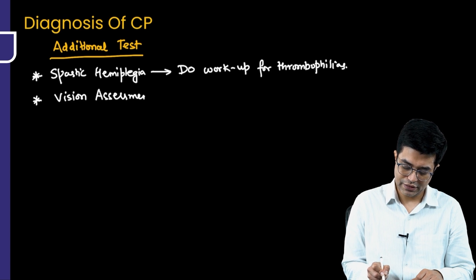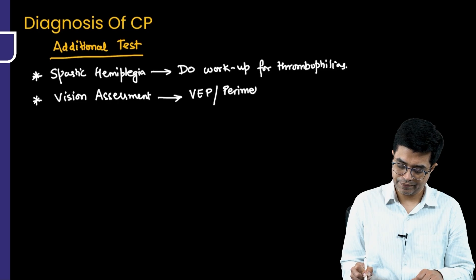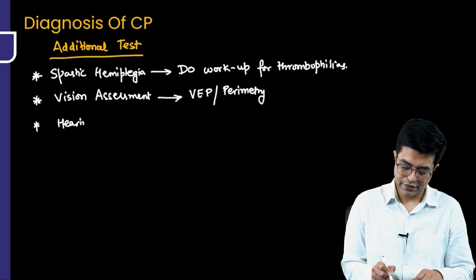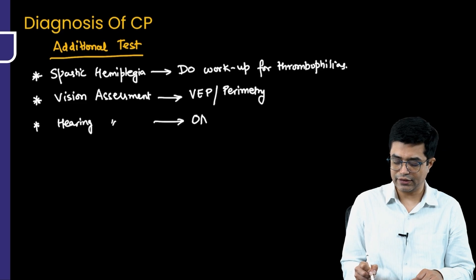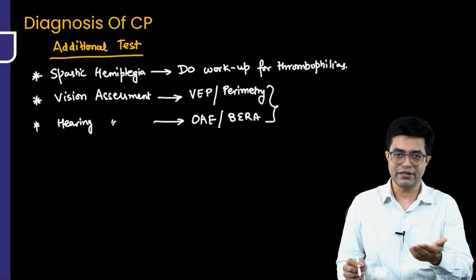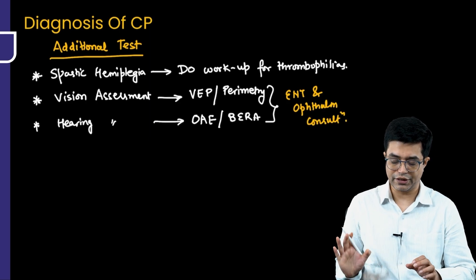Vision assessment is done using visually evoked potentials in a young child, or perimetric examination for visual field defects in older children, though the latter is less commonly done in younger children. Hearing assessment is also required; in a young child it is done by otoacoustic emission, and in an older child by BERA. The specific tests can be decided by experts — ENT and Ophthalmology consultation is very, very important and should always be taken.